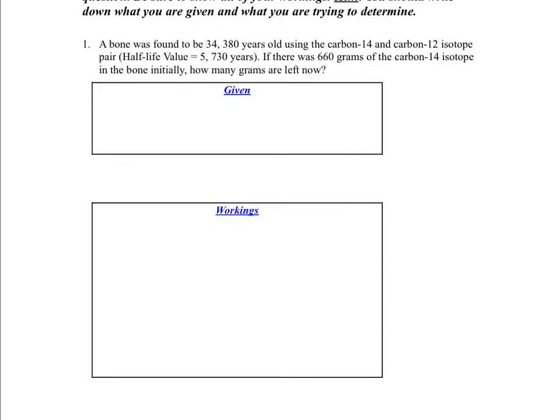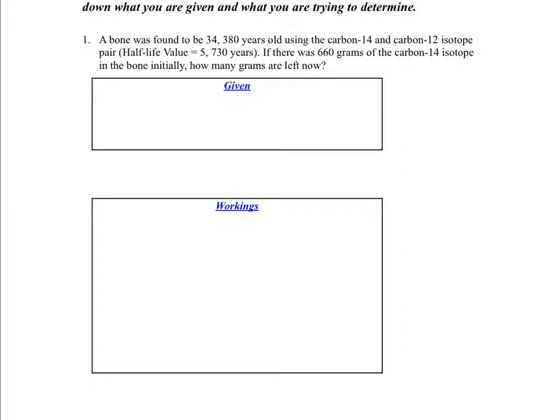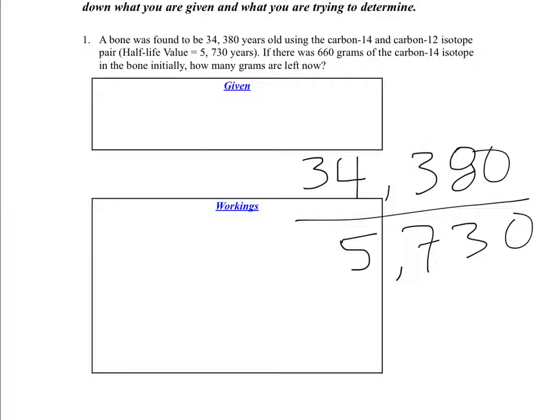So we read this question here. A bone was found to be, so we know the age of the bone. We also know that they're using carbon-14 and carbon-12 with a memorized half-life of 5,730 years. So the first thing that we can actually do is take the 34,380 and divide that by 5,730. You're going to need a calculator next to you while we're doing these problems. So I'm just going to enter into my calculator 34,380 divided by 5,730 and that gives us six half-lives.